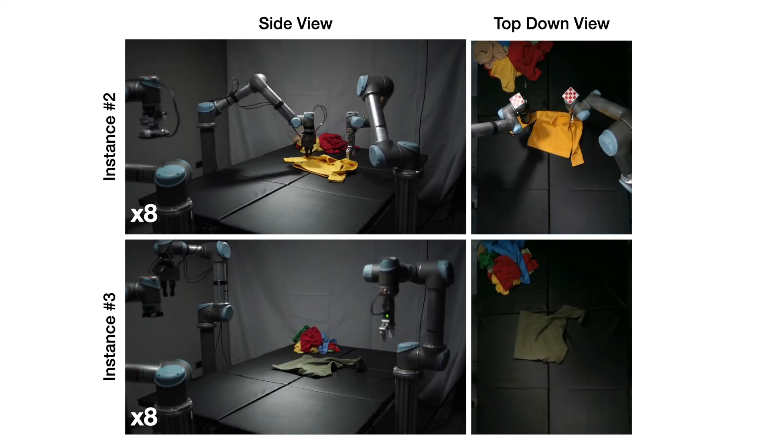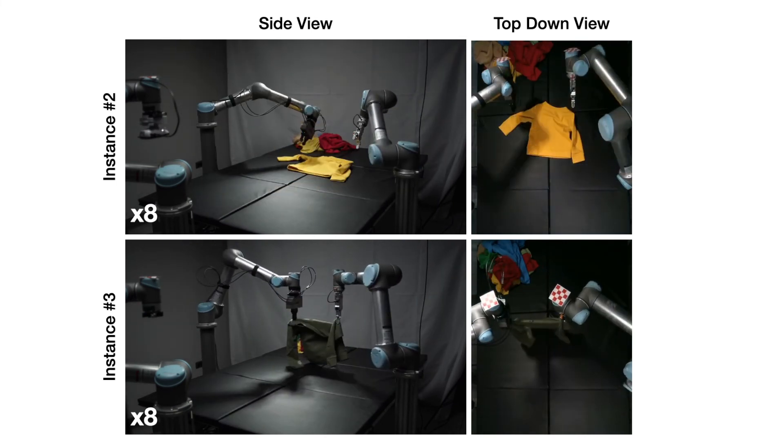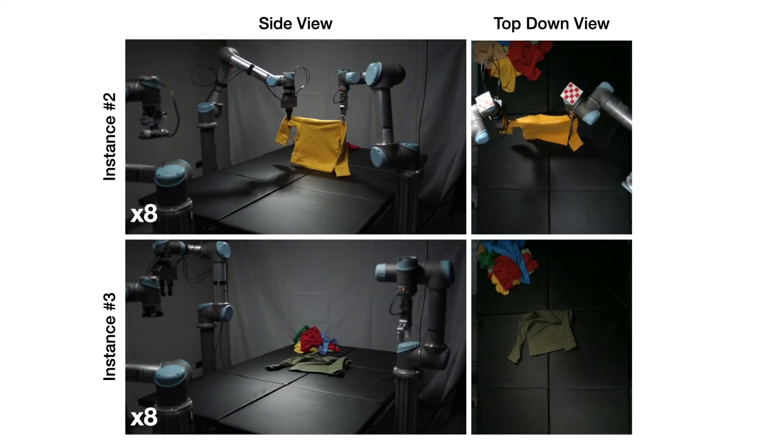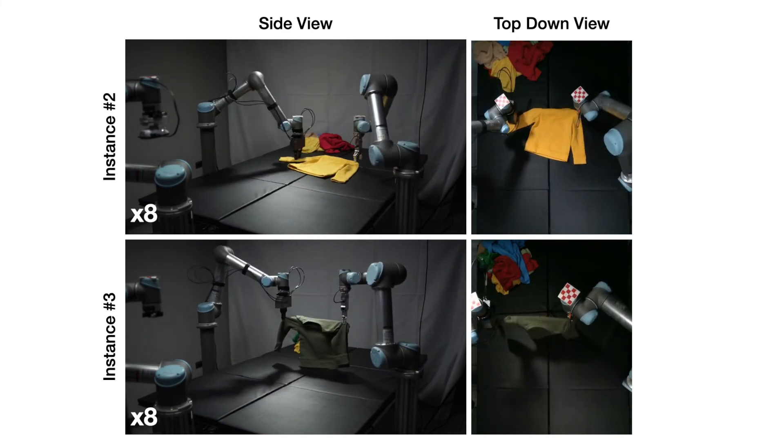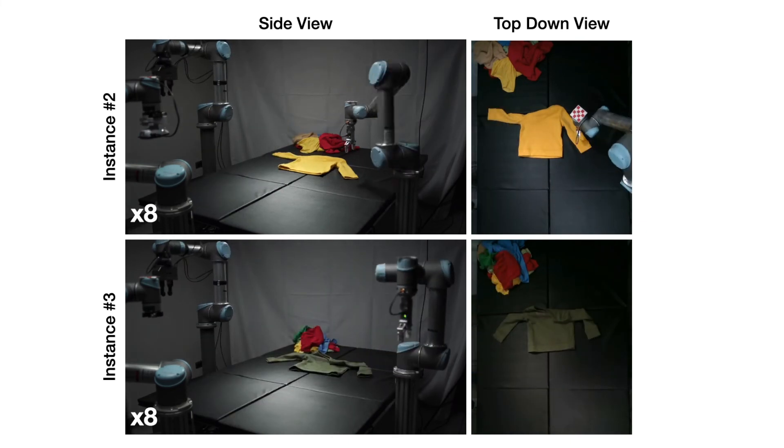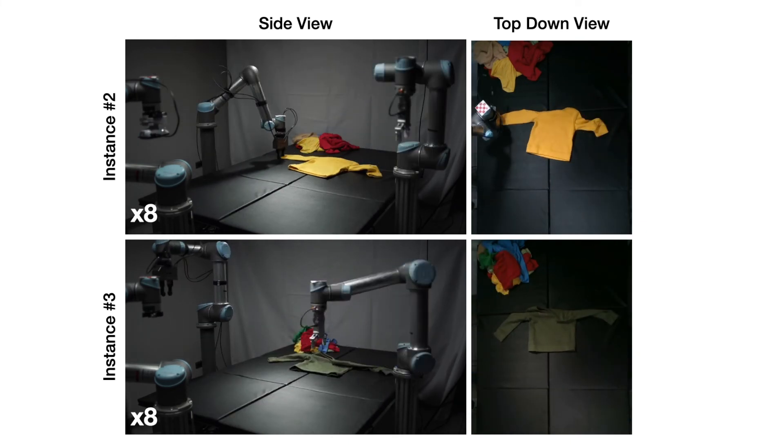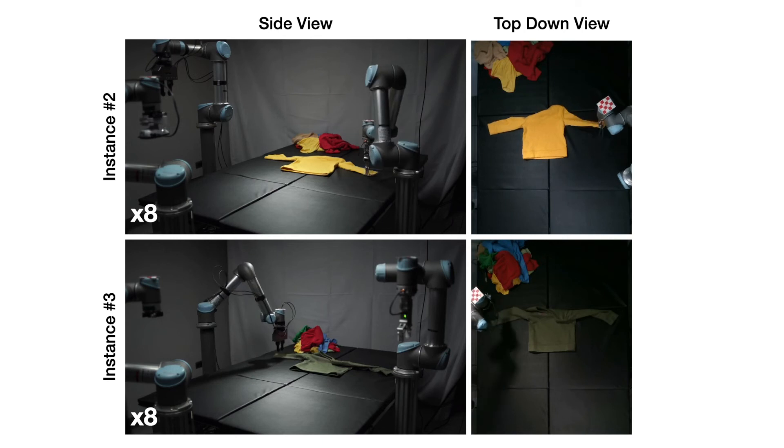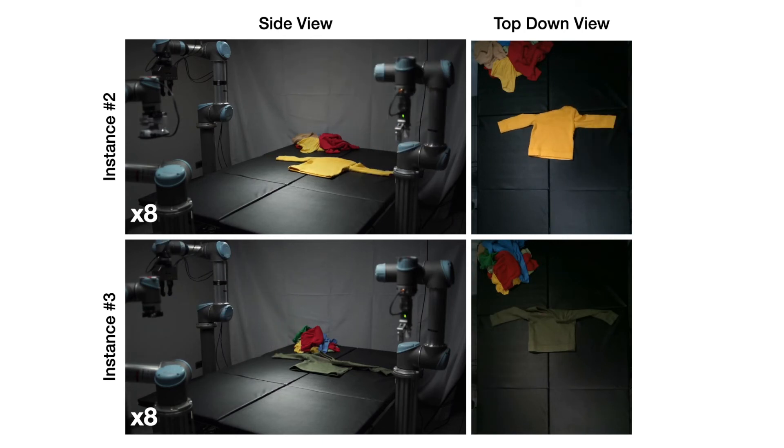To demonstrate our method's generalization within its own category, we present two other examples of shirts, which undergo the exact same canonicalized alignment policy and folding heuristic. As before, the robot first flings and aligns the cloth, and then it uses Pick and Place to bring the arms to a T-pose, and finally the folding heuristic is executed.